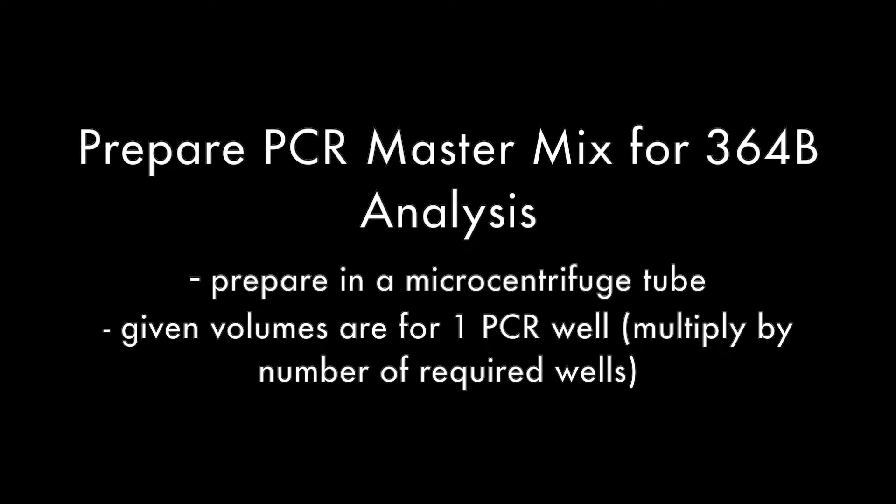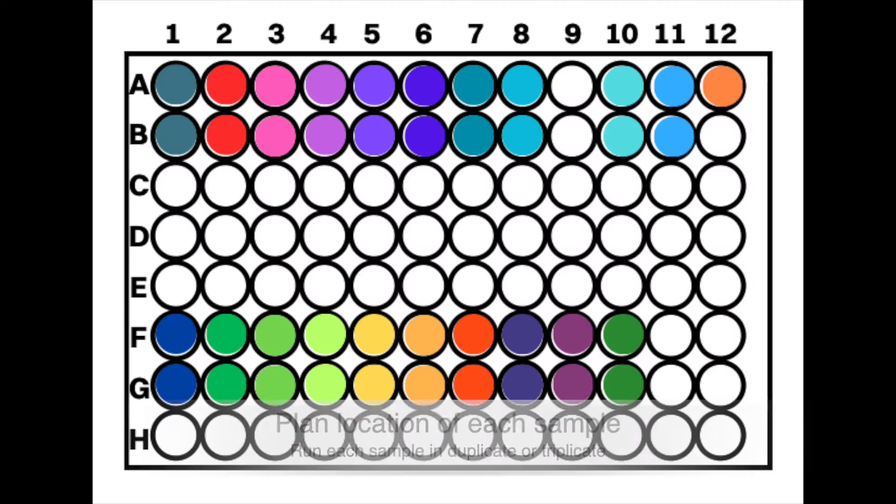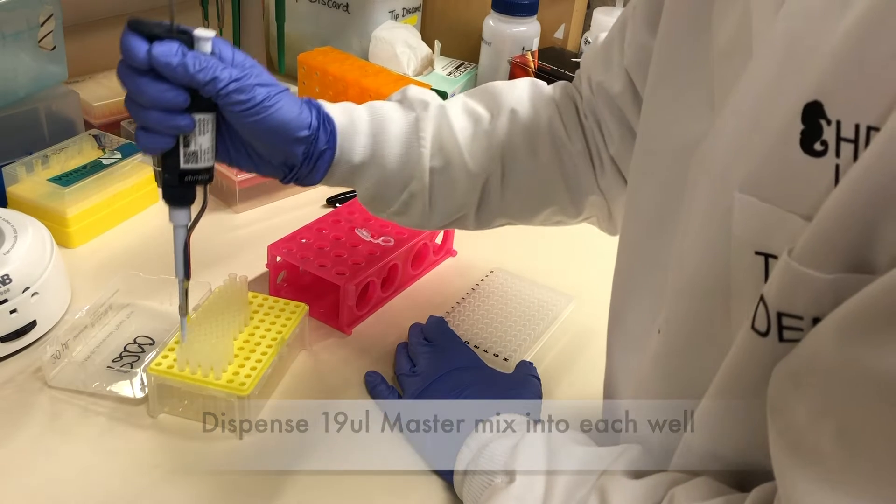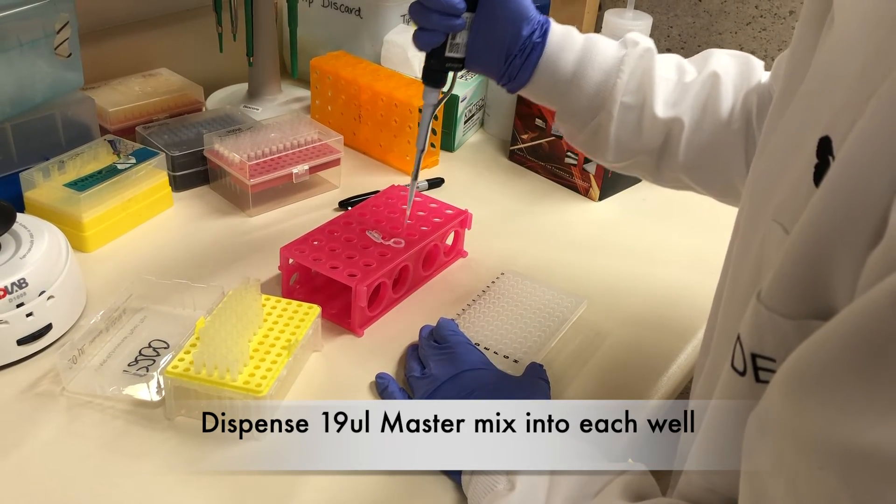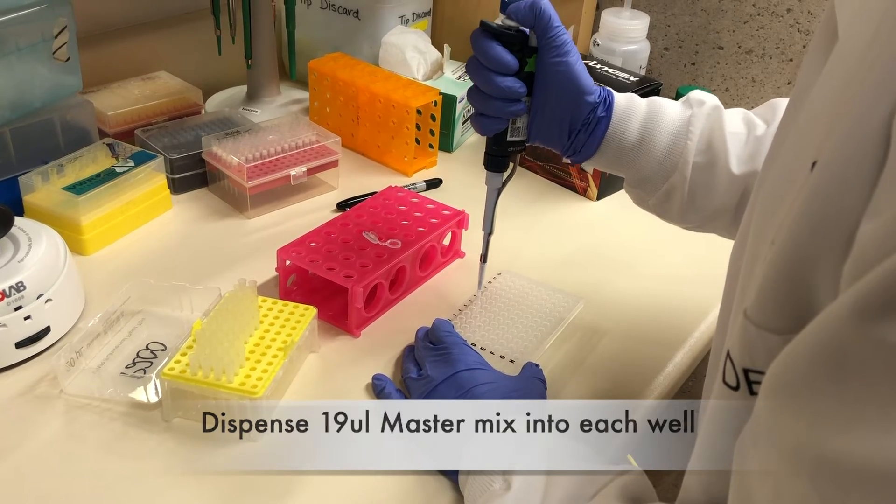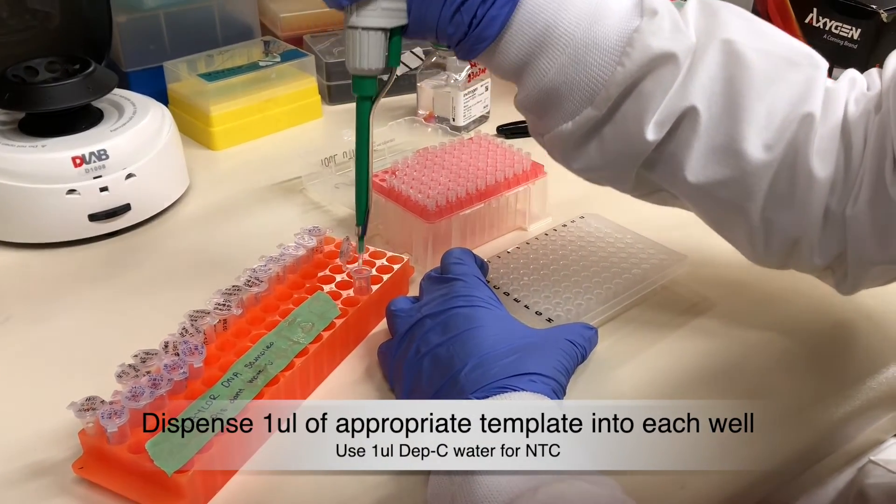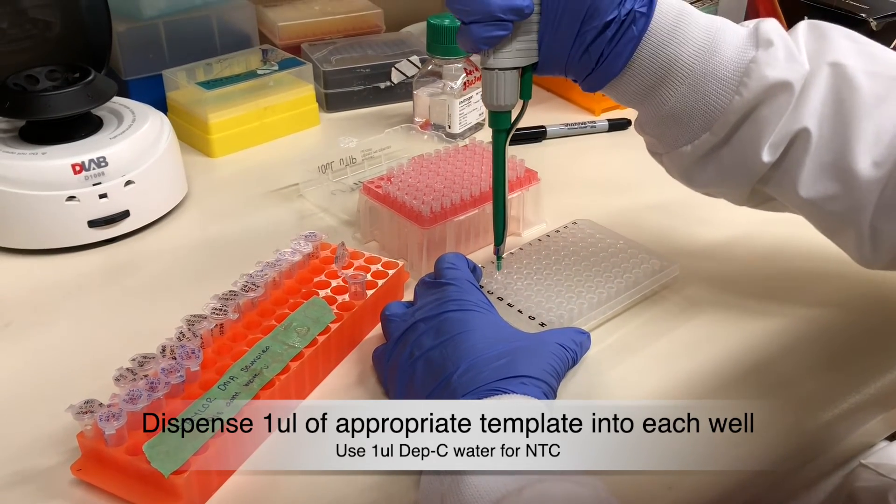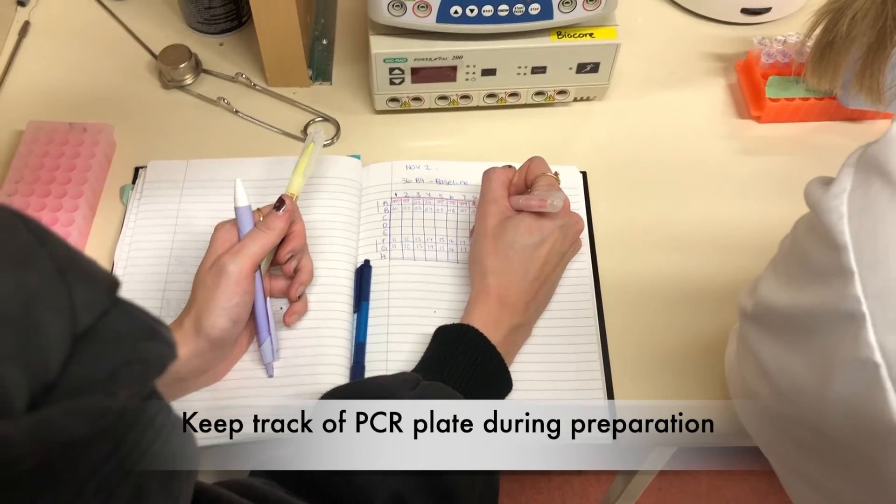Repeat this protocol for the 36B4 PCR plate using the following volumes and primers. Blueprint the location of each sample in your plate. Add 19 µL of master mix into each well, followed by 1 µL of the appropriate template into each well. Use Depsy water for the NTC. Ensure to keep track of your wells as you fill them.